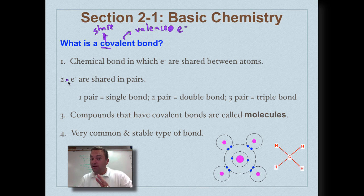Now, electrons are shared in pairs. This is real important. So, if you have one pair of shared electrons, that's a single bond, two pairs of shared electrons, double bond, and then three pairs of shared electrons, that's a triple bond.